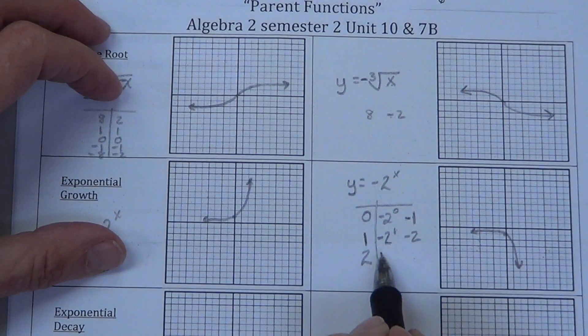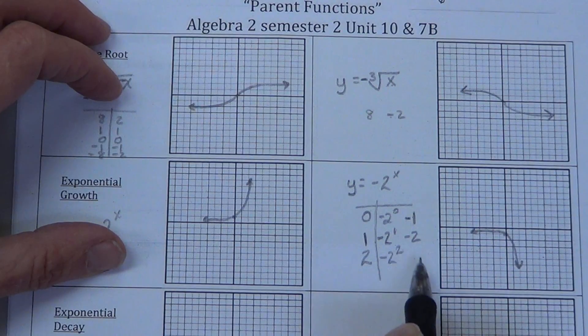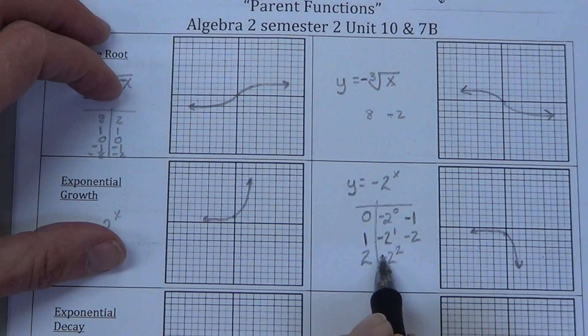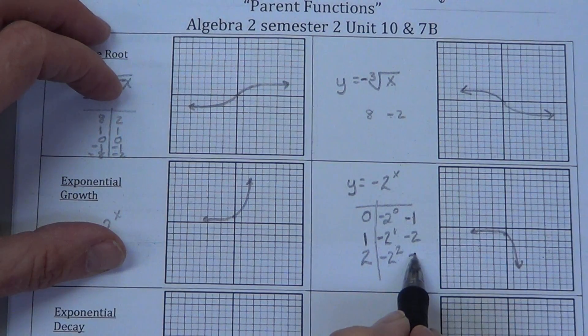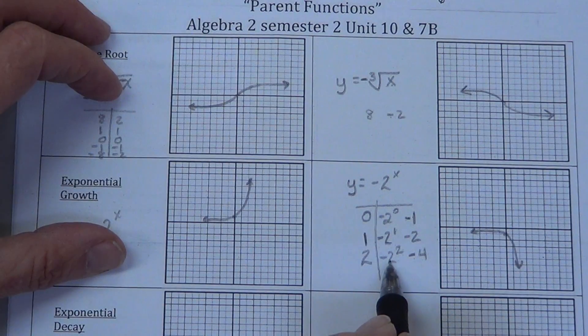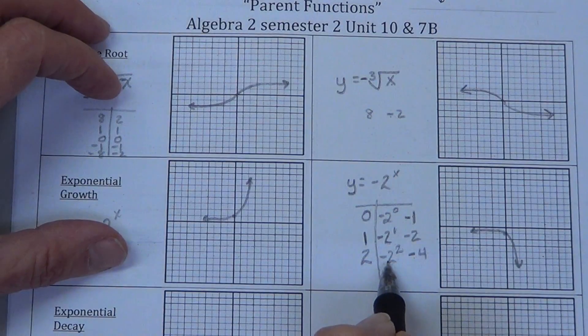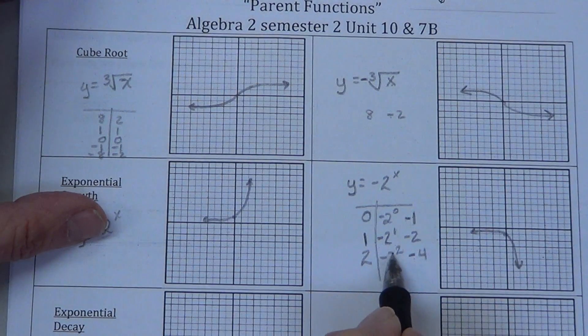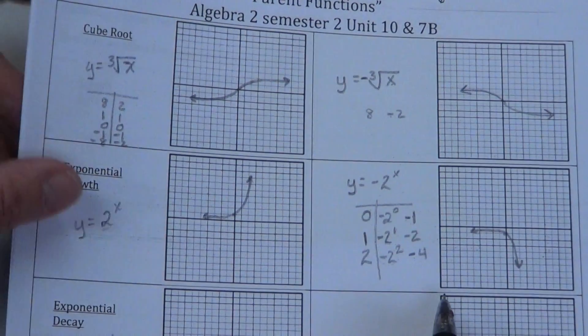Second, negative 2 squared. Now, remember, if this negative is not in parentheses, we don't square the negative. So it literally becomes negative 4. In order to get a positive 4, you'd have to have parentheses around that, and it would be negative 2 times negative 2. This way, it's simply 2 squared times a negative.